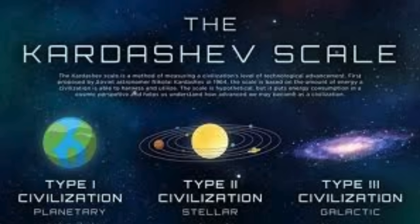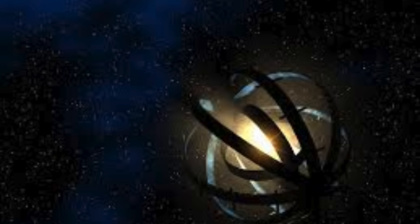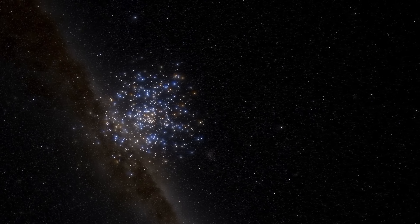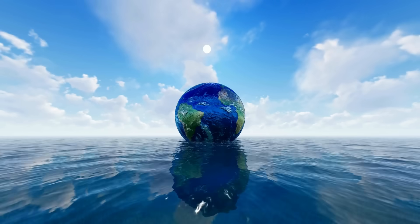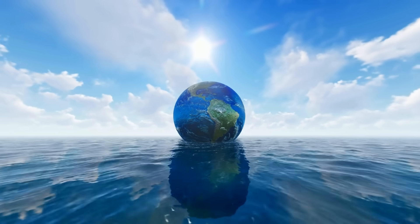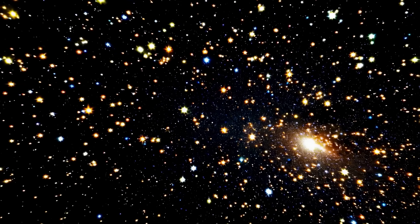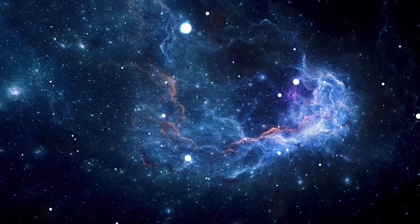To understand the stakes, let's turn to the Kardashev Scale, a framework proposed by Soviet astronomer Nikolai Kardashev in the 1960s. It classifies civilizations by their energy use. Type 1 harnesses a planet's resources, Type 2 captures a star's full output, and Type 3 taps an entire galaxy.